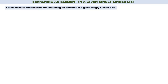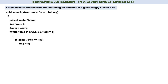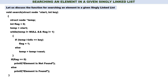Let us go to the function and discuss the function for searching an element in a given single linked list. Name of the function: search. Two parameters: one is start, which contains the address of the linked list; another is key, the element to be searched. Declare a temporary pointer. Flag is initialized to 0. Temp is equal to start. While temp not equal to null and flag not equal to 1: if temp of info is equal to key, make flag equal to 1; otherwise go to the next node — temp is equal to temp of next. When you come out of the while loop, if flag is equal to 0, element not found; else element found. The logic for searching an element in a single linked list is quite simple and straightforward.